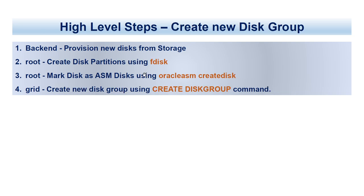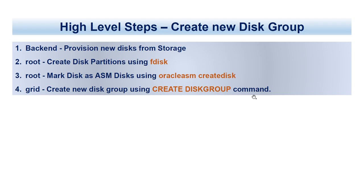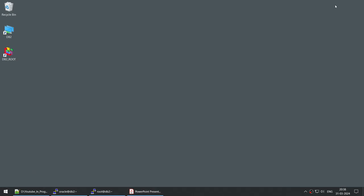The steps to create a new disk group — the first three steps are exactly the same. You provision the new disk from storage so the disks are visible, then as root you create the disk partition using fdisk, then you use the oracleasm create disk command to mark the disk as an ASM disk. Then using the grid user you use CREATE DISKGROUP. So to create a new disk group use CREATE DISKGROUP; to add a disk to an existing disk group use ALTER DISKGROUP. Now that we've seen all the steps, let's connect to our server.